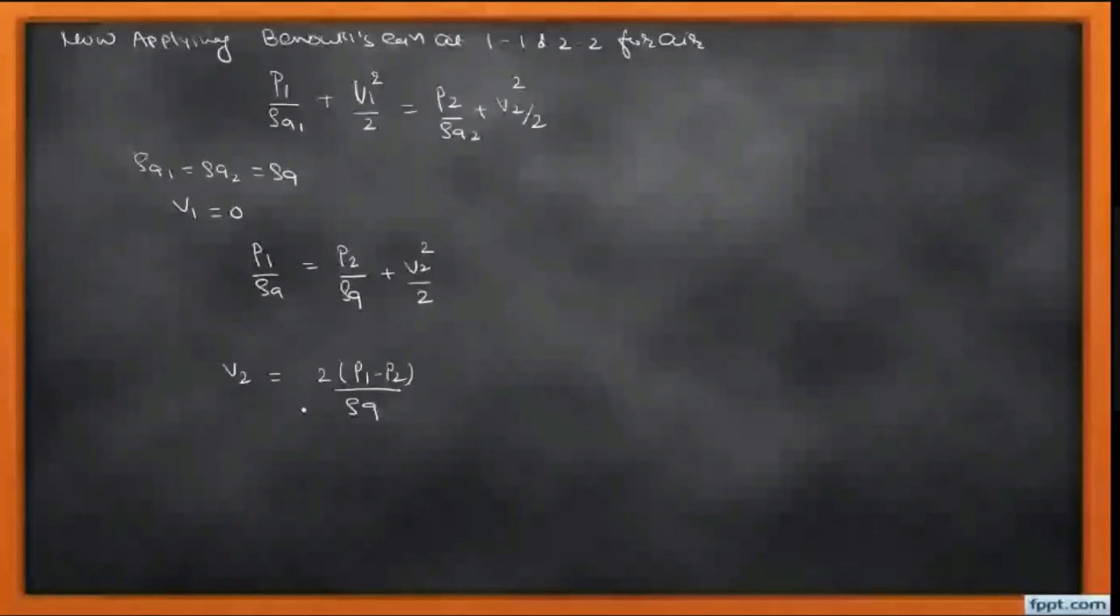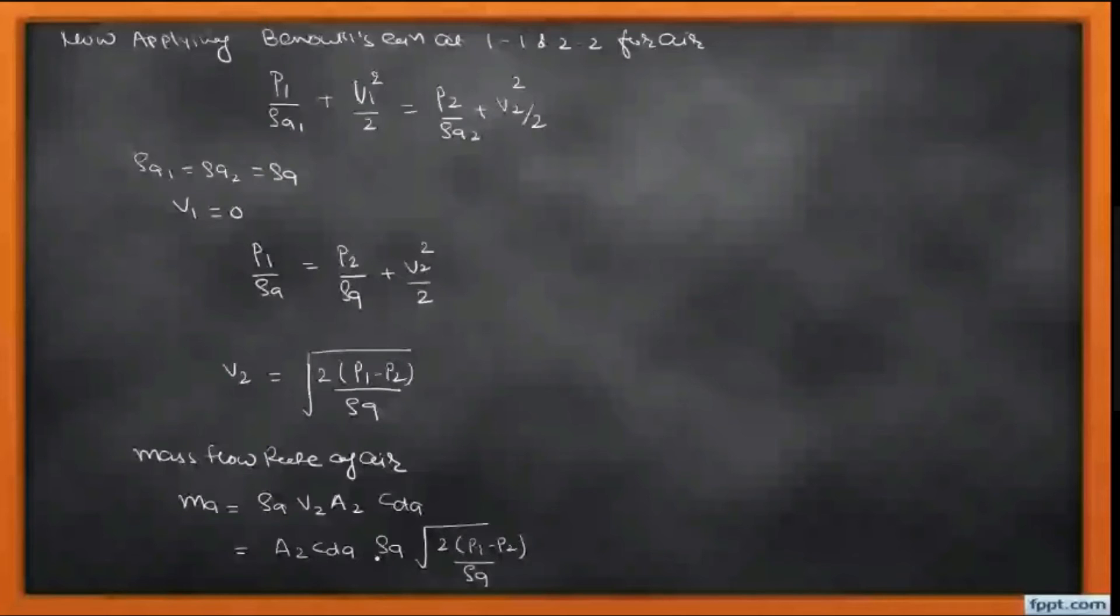Now we calculate the mass flow rate of air: MA equals A2 · VA · CDA times square root of 2(P1 - P2)/ρA. This ρA we have inserted in the square root, so it becomes ρA². After canceling, our expression for MA becomes A2 · CDA under root of 2ρA(P1 - P2), or we can write as delta P.